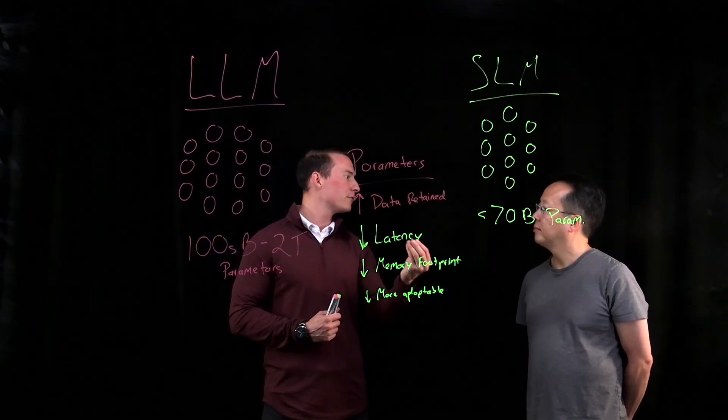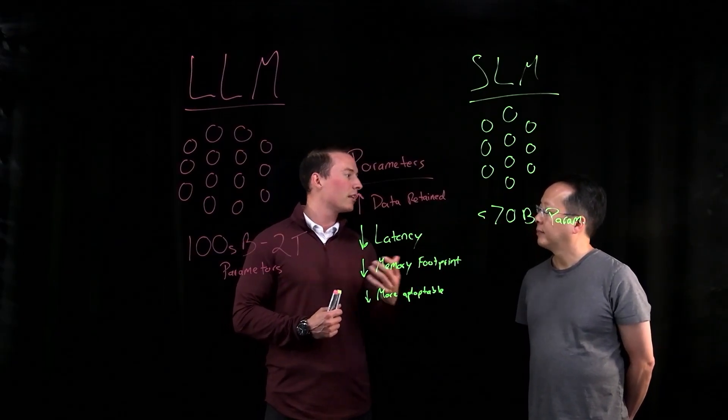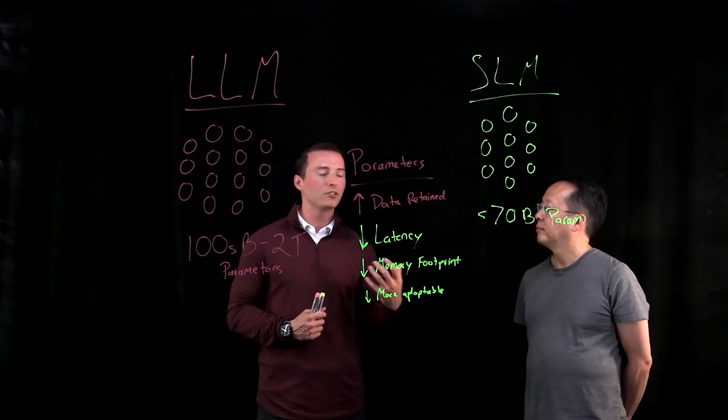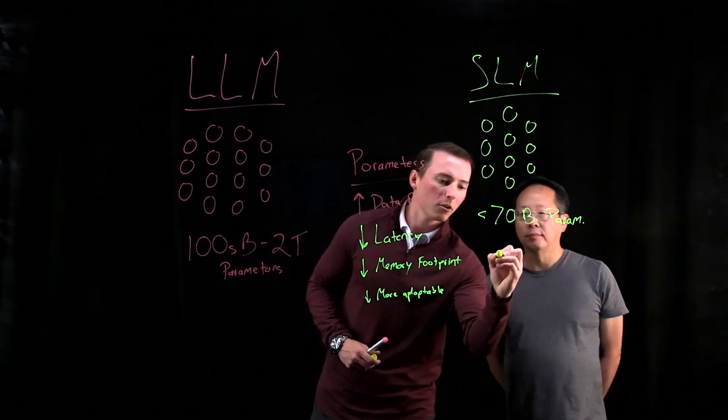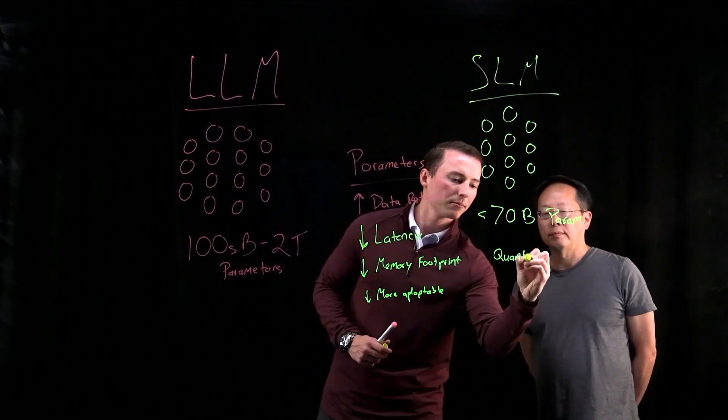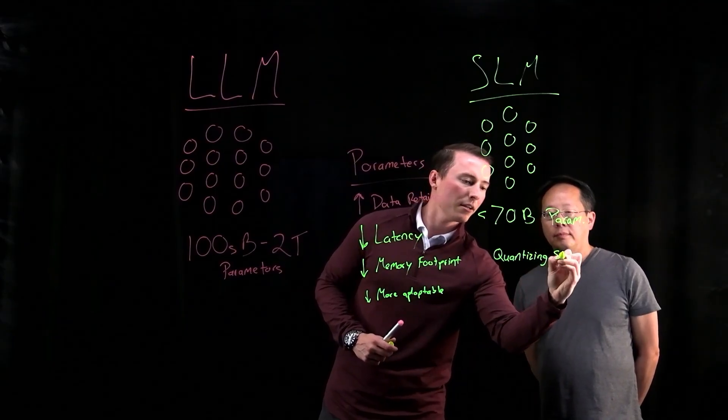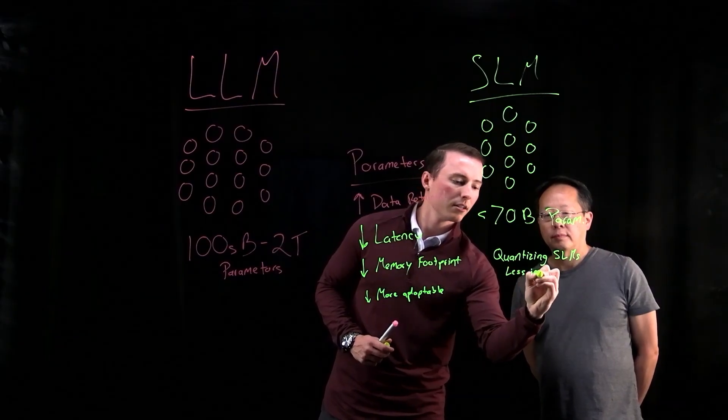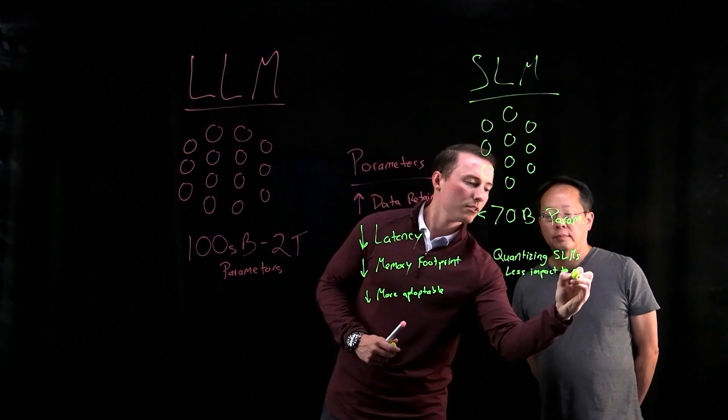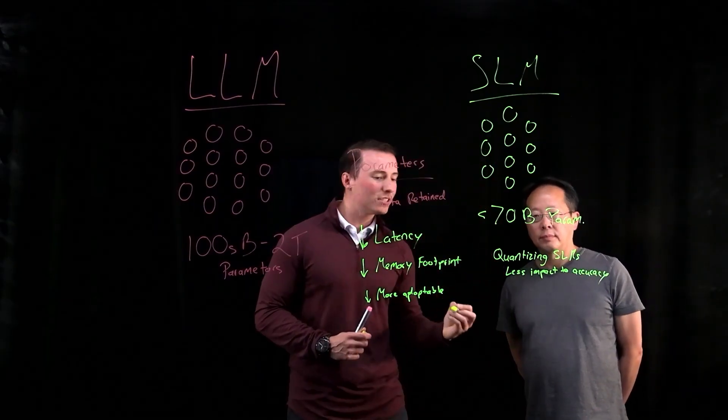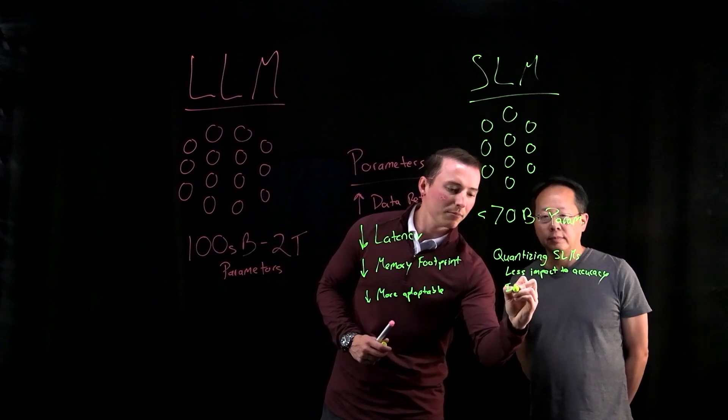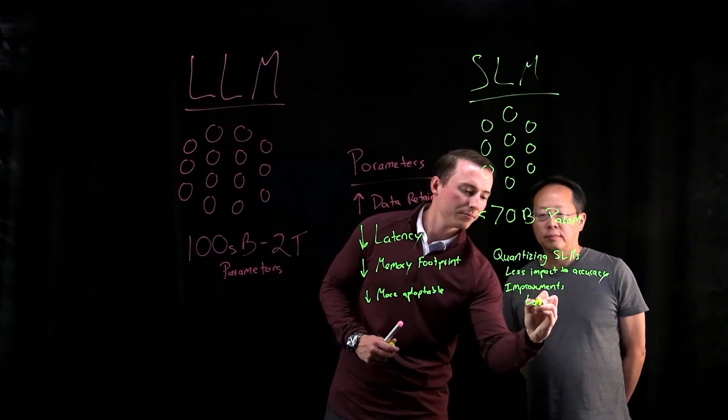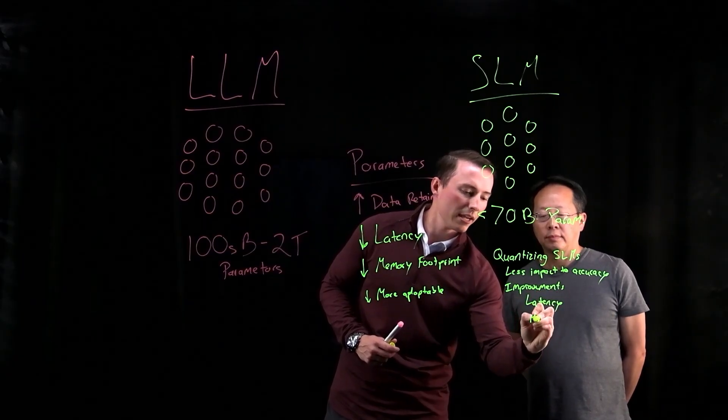Now, where that works well in the favor of SLMs is because you have fewer parameters and less compounding effect. We've actually found that quantizing small language models doesn't have as much of a hit to accuracy. So when you are quantizing SLMs, you actually have less impact to accuracy, even though you still get the same improvements to latency and memory footprint.